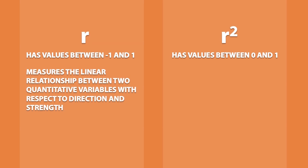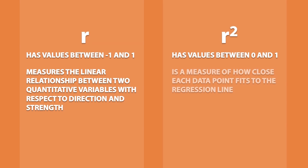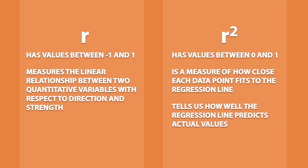Correlation measures the linear relationship between two quantitative variables with respect to direction and strength. On the other hand, r-squared is a measure of how close each data point fits to the regression line. So in fact, r-squared tells us how well the regression line predicts actual values.